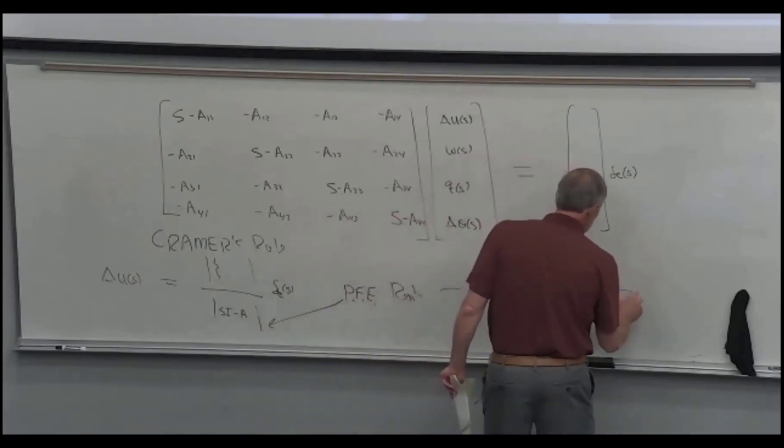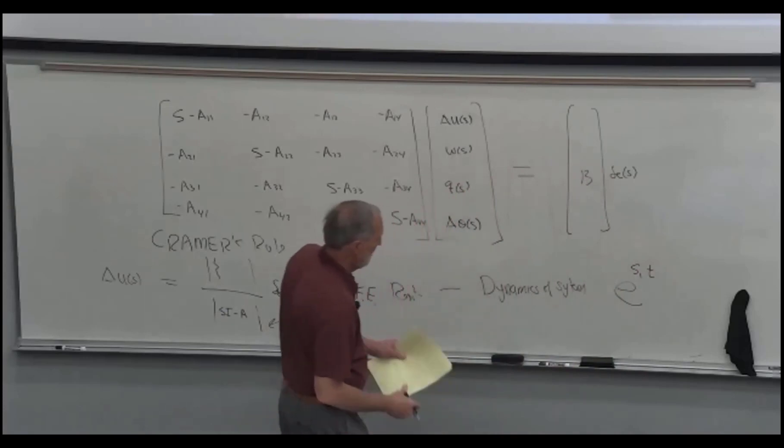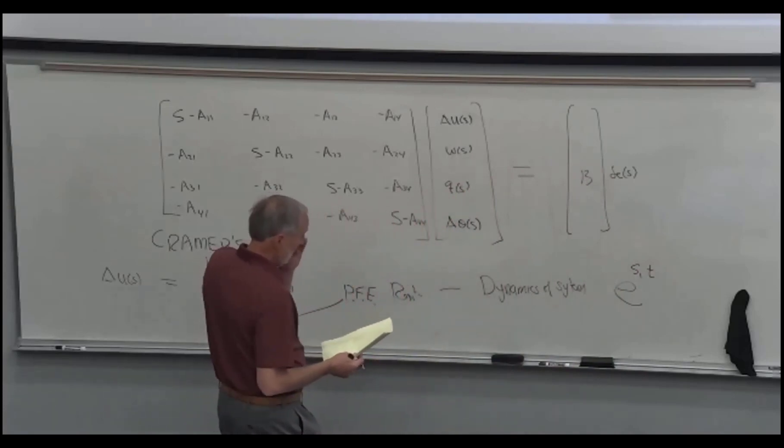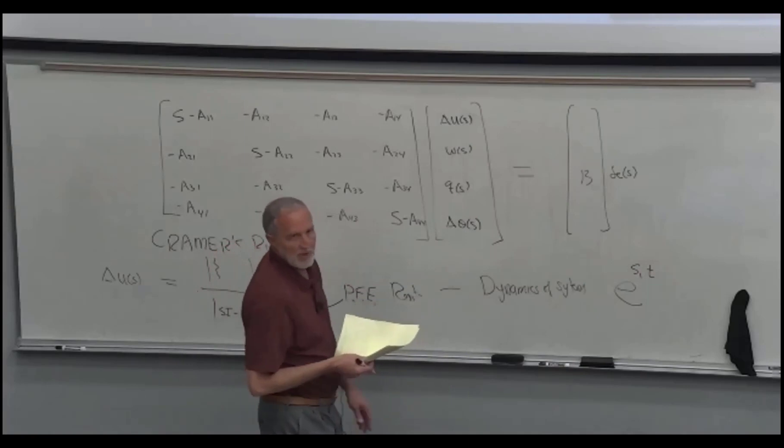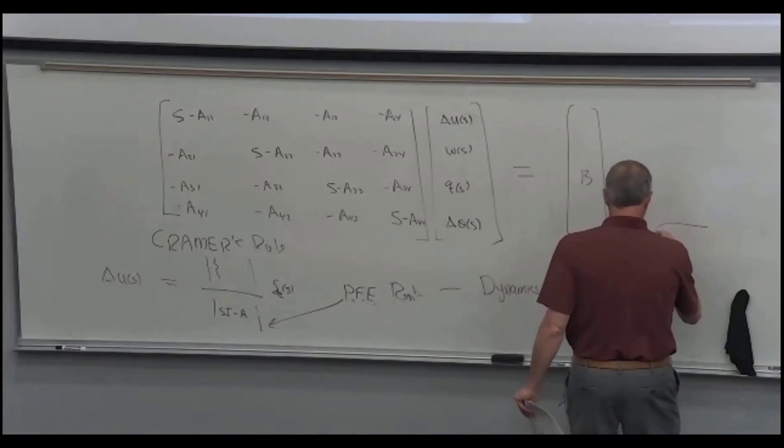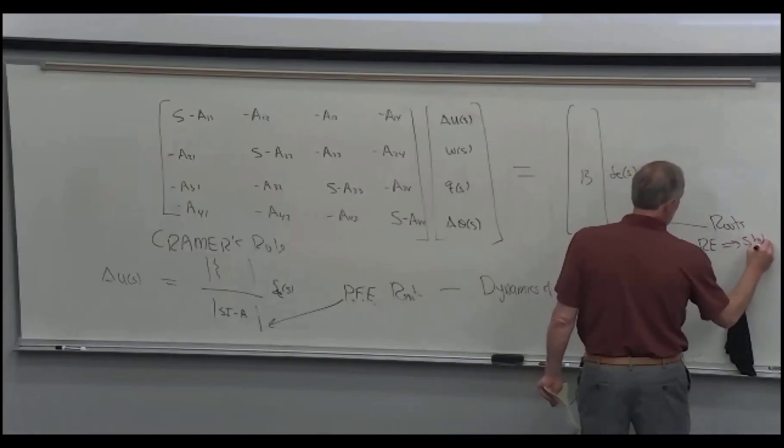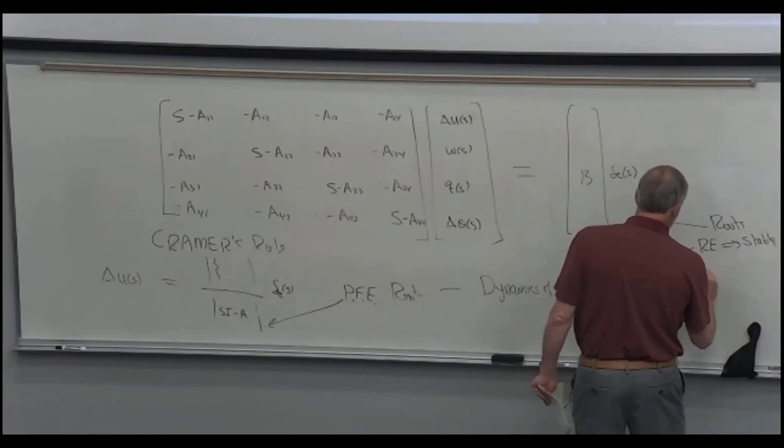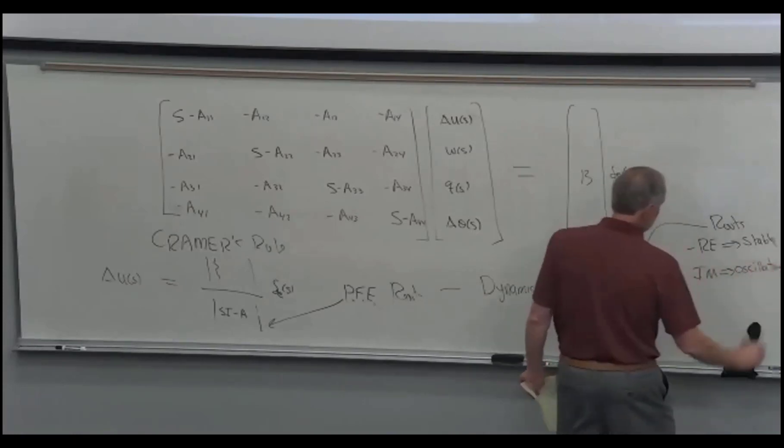That is the dynamics of the system. Just like we did for the mass-spring damper system, because we get e to the root times t. If that root has a negative real part, it damps out. If it has an imaginary part, it's oscillatory. So we look at this root: real part, negative real part means stable, damped. And an imaginary part means oscillatory.